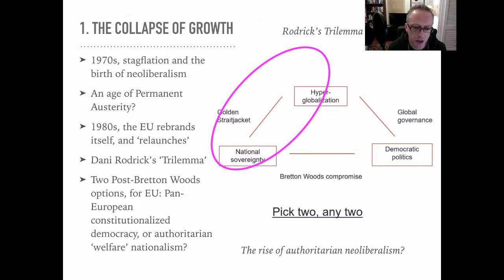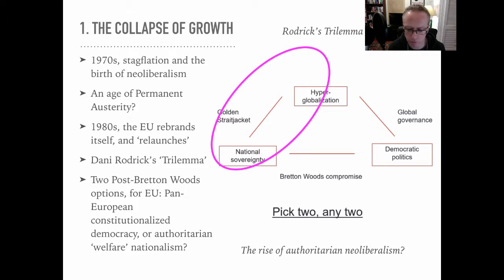But under globalization after the 1970s, the axis switches to what Rodrik calls the 'golden straitjacket,' where democratic politics ceases to be able to articulate any kind of restriction or regulation over globalization or the logic of the market. National sovereignty begins to become not so much a marriage counselor between the economy and democracy, but rather a handmaid of the global economy.